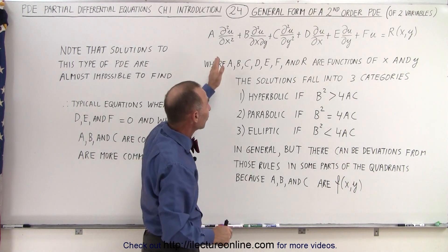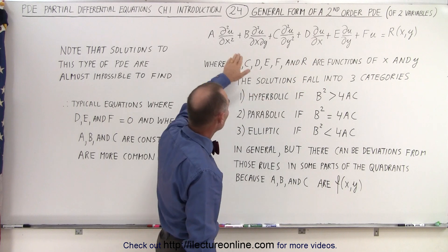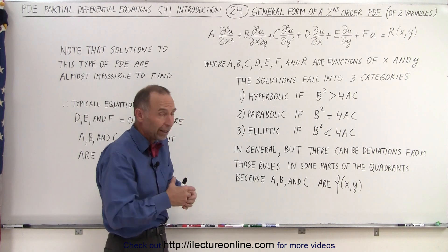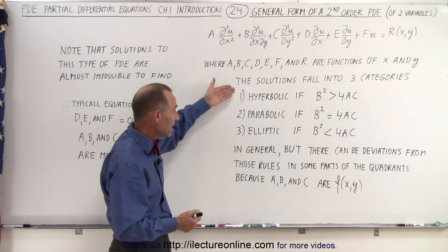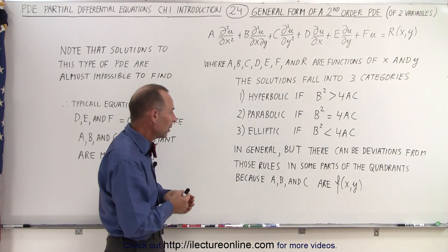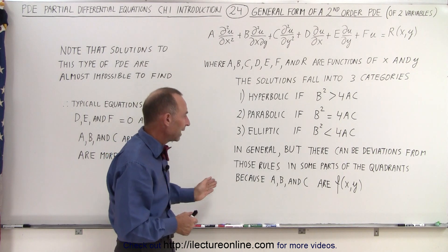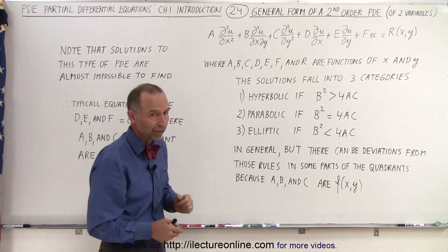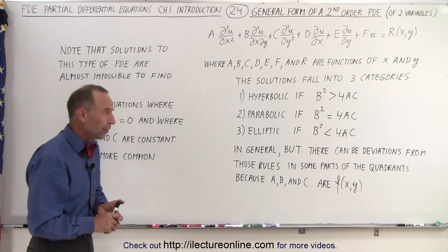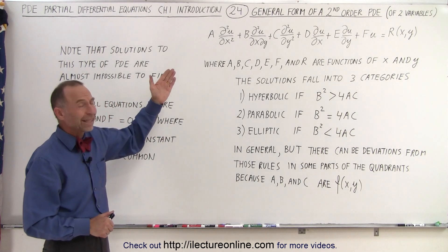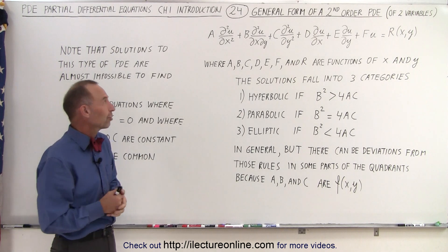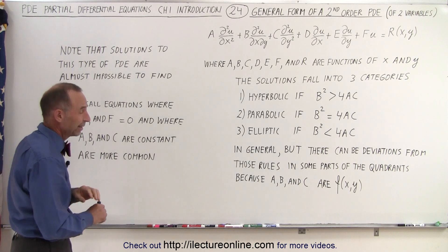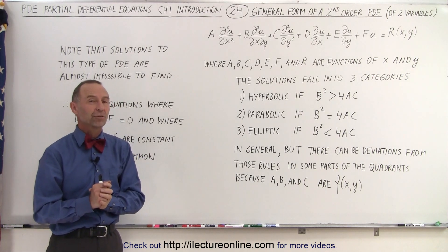Of course, we also have an influence of D, E, and F. And depending upon the values of A, B, and C — because after all, they are functions of X and Y — there may be some deviations from those rules in parts of the domain where the function will not fall into the hyperbolic, parabolic, or elliptic variety. When we try to solve something that complicated, the solution is almost impossible to get. Notice that the solutions to this type of partial differential equation are almost impossible to figure out.